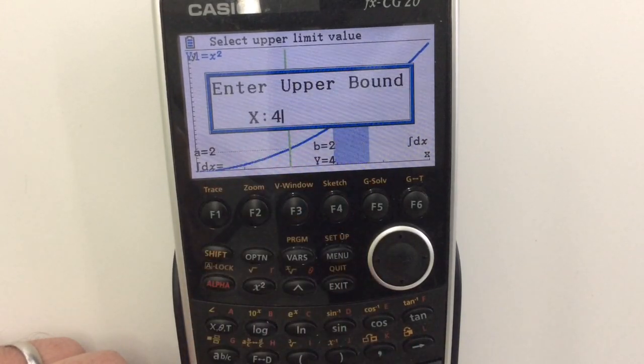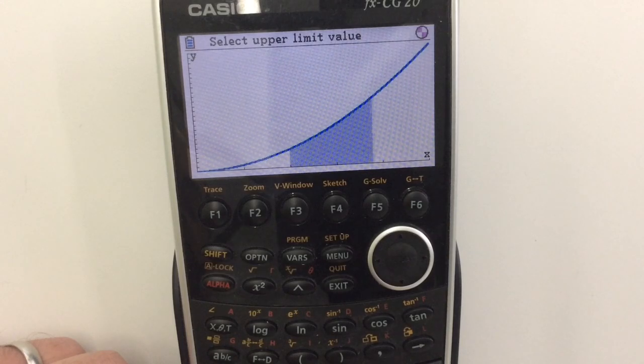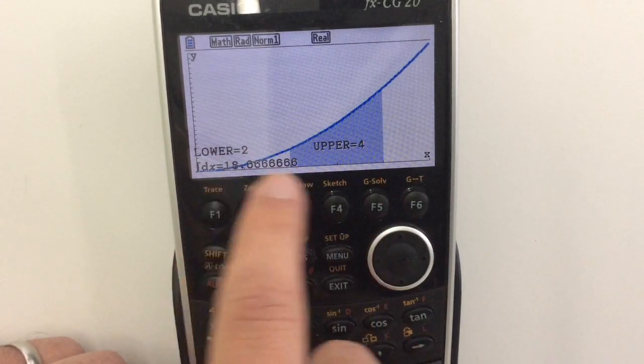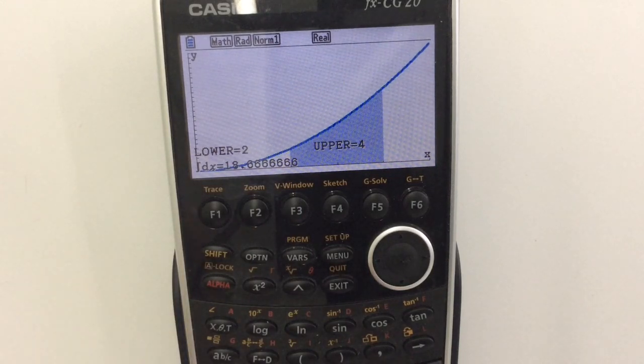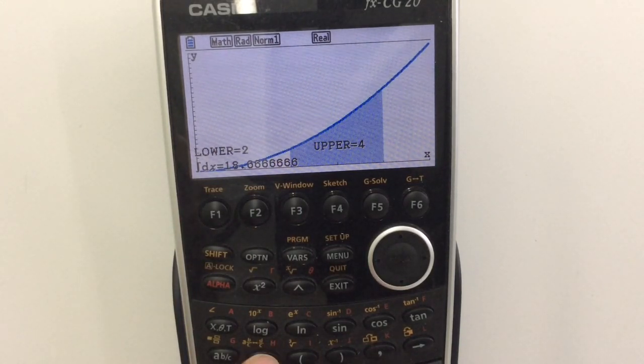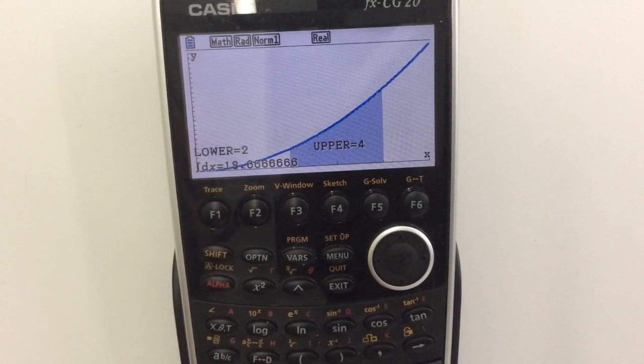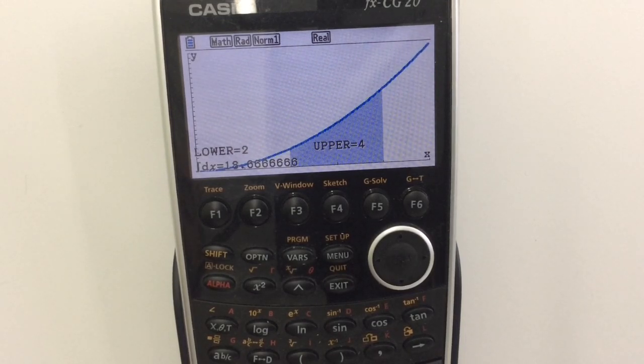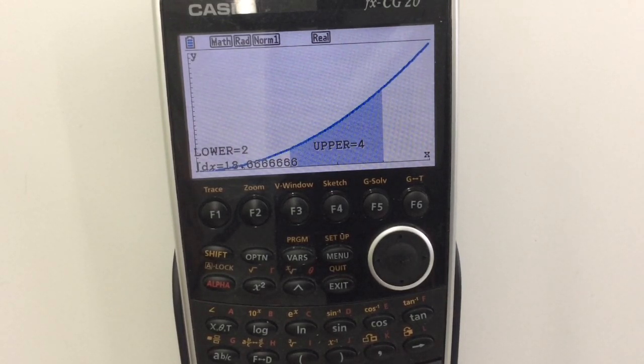It's got its upper bound there. Now it's shaded in that section. And again between 2 and 4, here is that value. Notice of course that it's only presenting it to us as a decimal. Pressing the F to D button doesn't do anything here. The answer is 18 and 2 thirds, but it can't actually determine that. It's just done it via a numerical method. And that's what it's ended up at. So that's how we can do it.